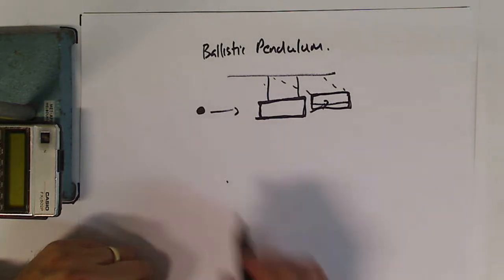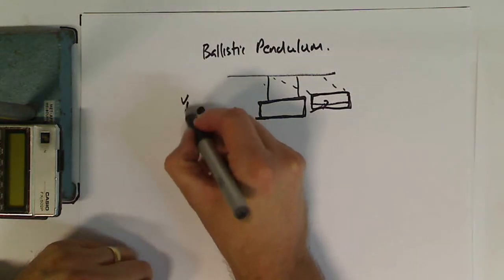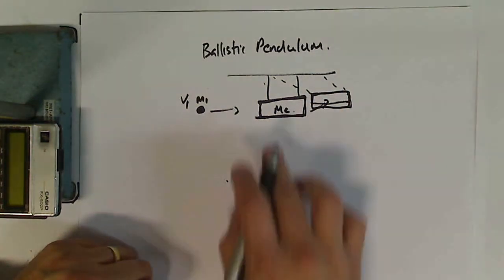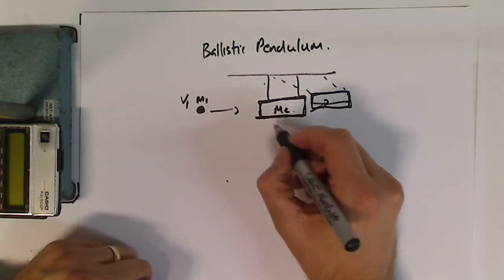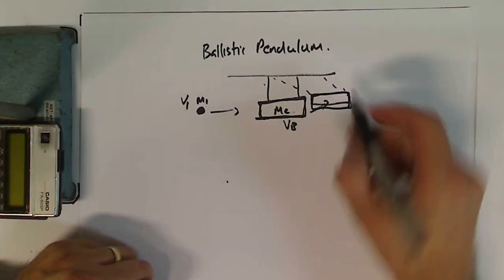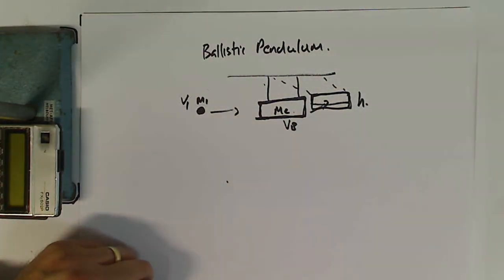So there's a few things we can say. To start off with, we'll call this v1 and m1, we'll call this m2. The speed of this system once the bullet has stuck to it we'll call vb, and we'll call the change in height h.